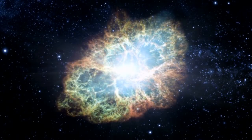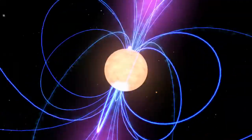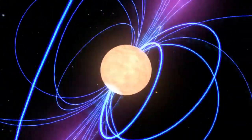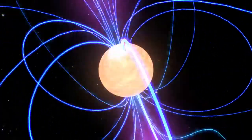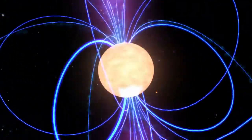The supernova left behind a magnetized neutron star, a pulsar. It's about the size of Washington, D.C., but it spins 30 times a second.